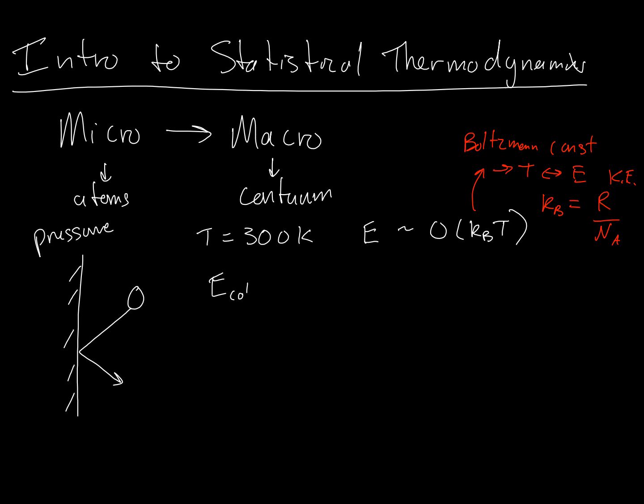So that basically means that the energy of every collision is on the order of 10 to the minus 21 joules. This is because the Boltzmann constant is on the order of 10 to the minus 23, and our temperature is on the order of 10 to the second power. Very small amounts of energy are involved in these particle wall collisions.